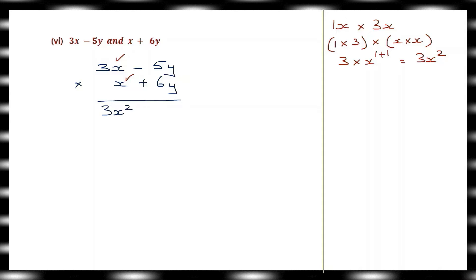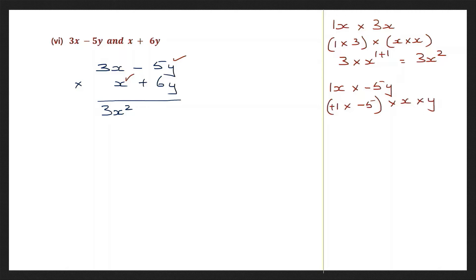Now we are going to multiply x into minus 5y: the numbers are plus 1 into minus 5 into 1x and 1y. Plus into minus is minus, 1 five is 5, giving minus 5xy. So that is minus 5xy.